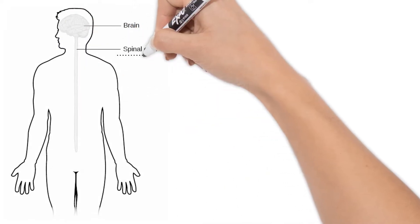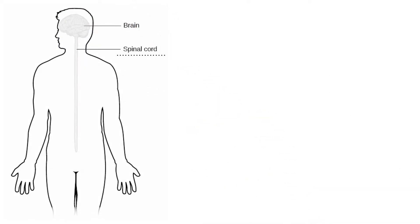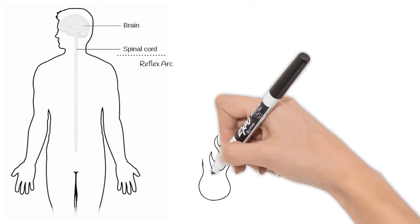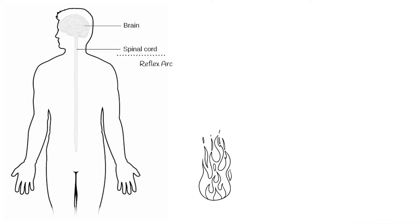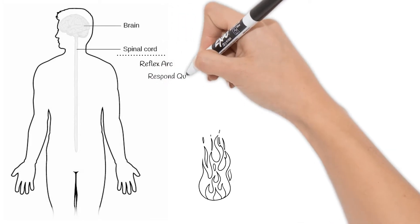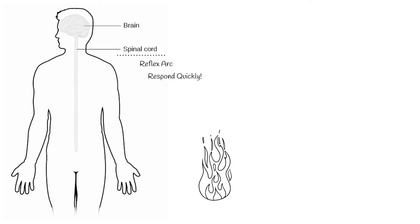Your spinal cord controls things such as reflexes, and this is called the reflex arc. Touch something hot, you quickly pull your hand back without really thinking about it. Reflexes help you respond quickly without your brain needing to process it first.